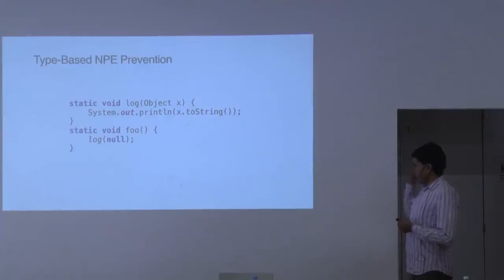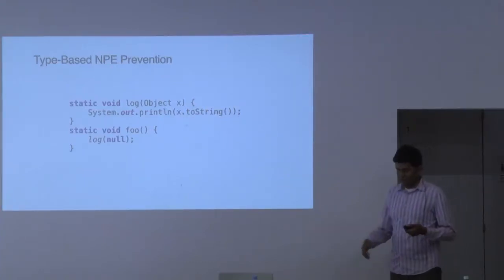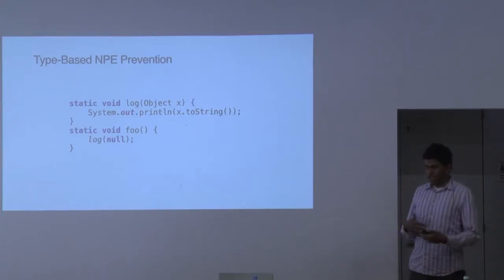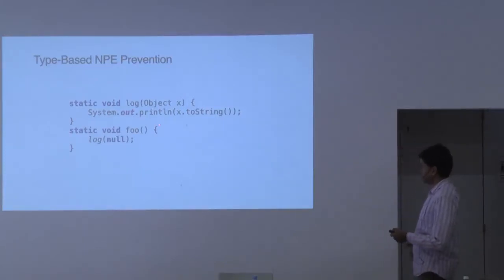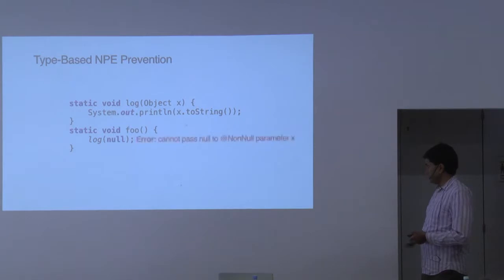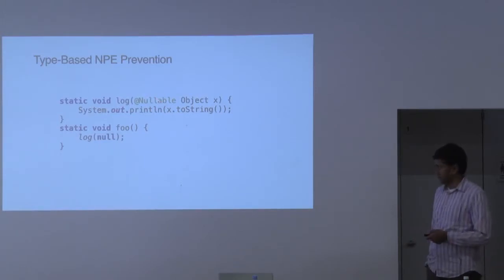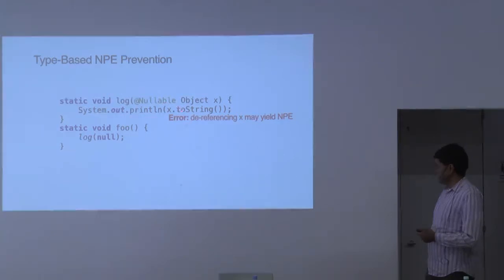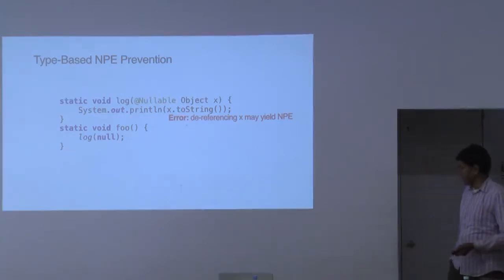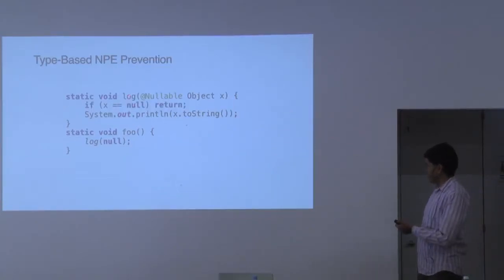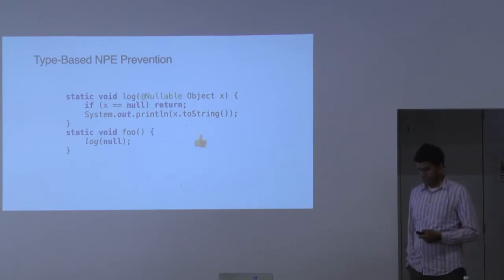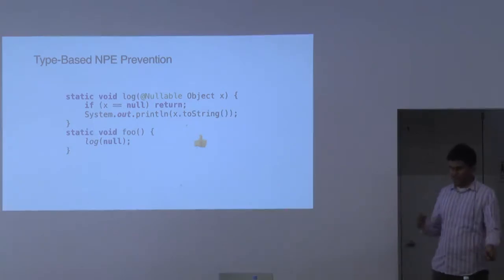With a type-based approach, you need to annotate whenever a return value, method parameter, or field might be null. Otherwise the tool assumes it can never be null and reports errors when you try to pass null to those locations. For example, a logging function that prints a parameter value — if you call it with null, you immediately get an error saying you can't pass null to a non-null parameter. You can address that by annotating it nullable, but then you'll get an error at the dereference. You can finally fix this by adding a null check. It's not doing whole-program data flow — it's a modular analysis based on annotations. Checker Framework from University of Washington was probably the first widely deployed tool doing this kind of checking; Eradicate was the version being used at Uber.